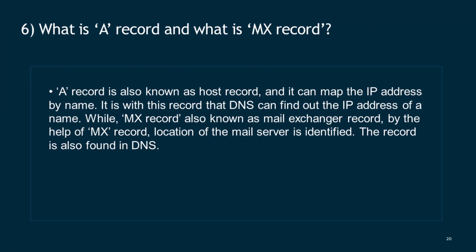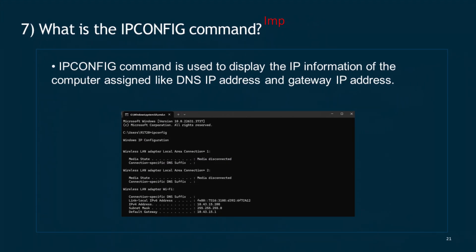Question 6: What is an A record and what is an MX record? An A record, also known as a host record, can map the IP address by name — it is with this record that DNS can find out the IP address of a name. An MX record, also known as a mail exchanger record, identifies the location of the mail server. This record is also found in DNS.